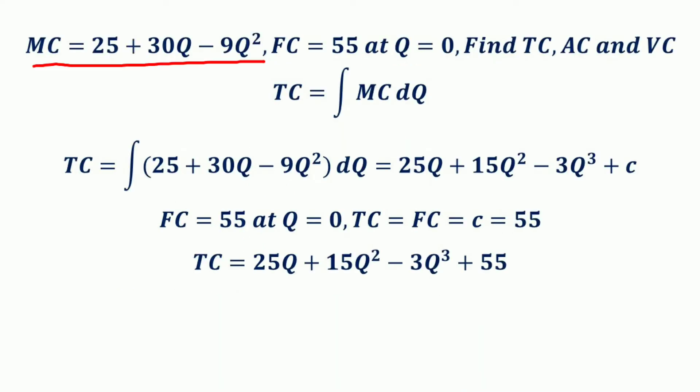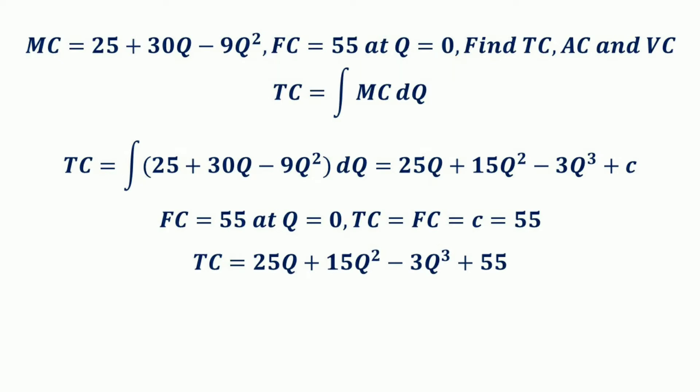Now we have another numerical example. The marginal cost is given as MC = 25 + 30Q − 9Q². The fixed cost is given as 55, meaning that even if production is zero, fixed cost is still present — so FC = 55 at Q = 0. Find the total cost, average cost, and variable cost.